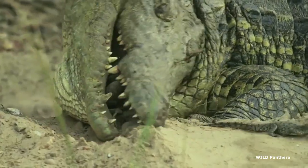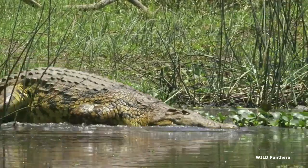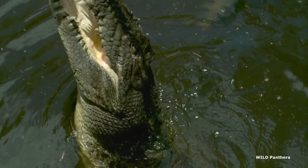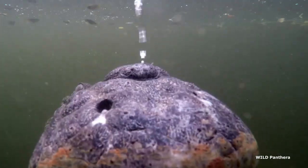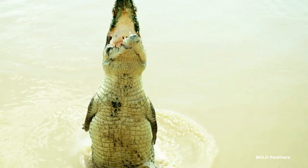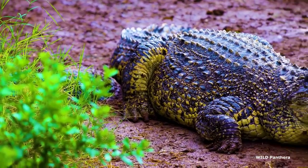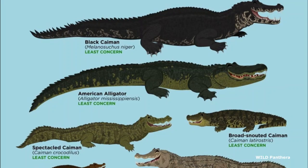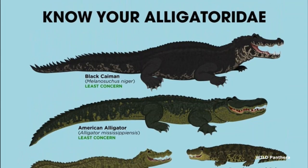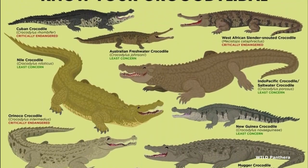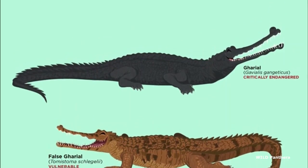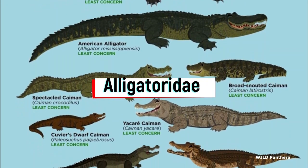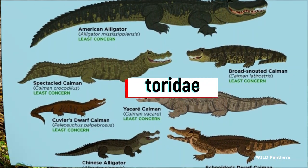The order Crocodilia consists of 28 extant species belonging to nine genera. This doesn't include hybrid species or extinct prehistoric species. Molecular studies indicate that the nine genera can be grouped into three families: Alligatoridae, which includes alligators and caimans; Crocodilidae, which includes true crocodiles; and Gavialidae, which includes the gharial and false gharial.